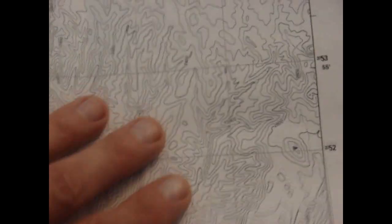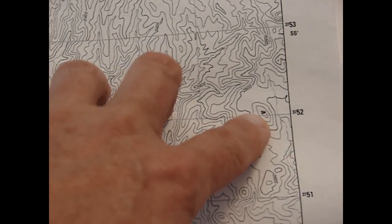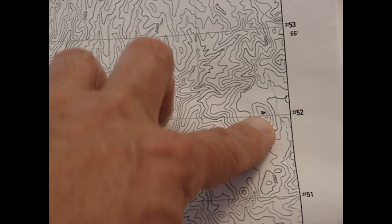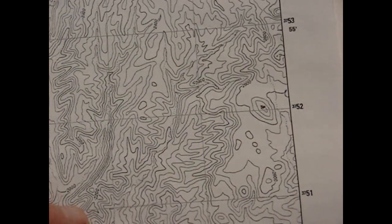Okay, the feature that we want to find here is this small hill here, kind of on the northeast side of this topographical map.